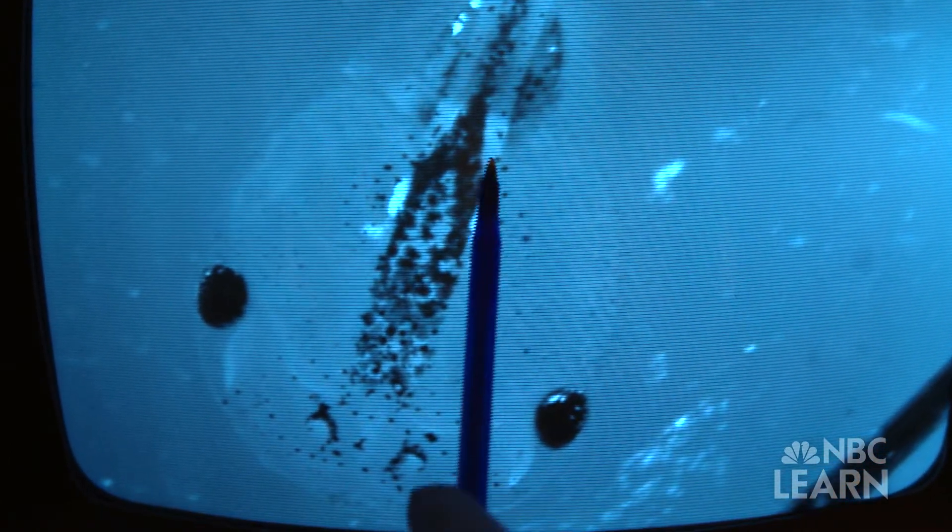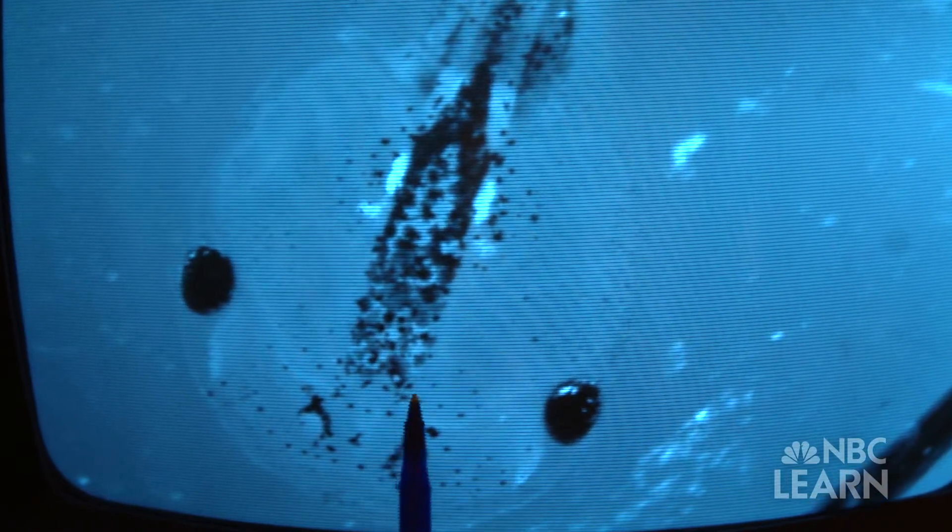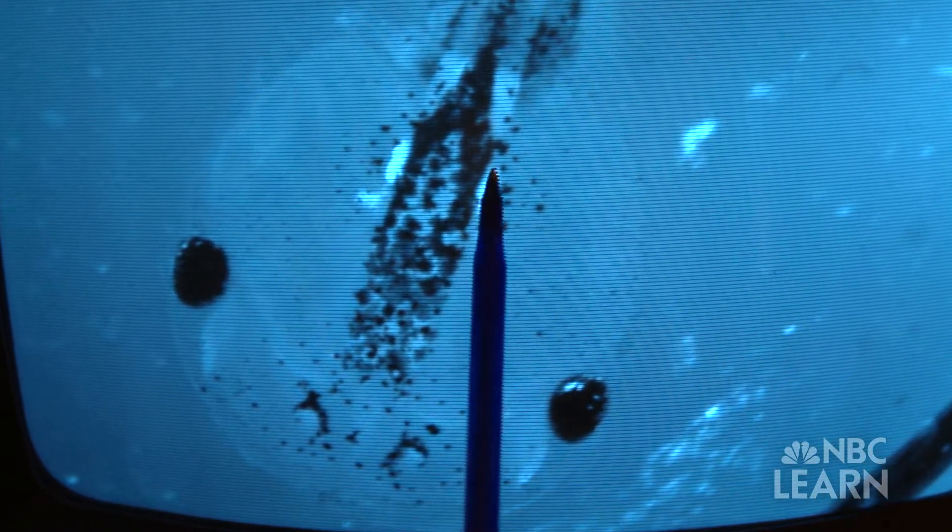This is a stage 49 tadpole. On either side, these dark spots are the eyeballs. Right here, this is one nostril and here's the other one. And then underneath this dark spot, these are pigmented melanocytes, so skin cells, and underneath that is the actual brain itself.